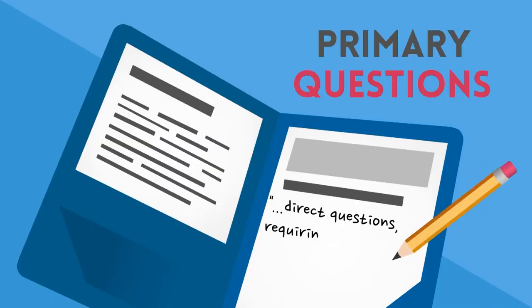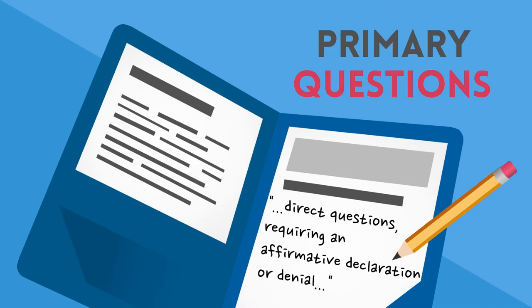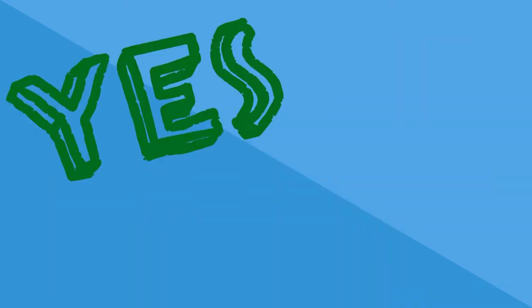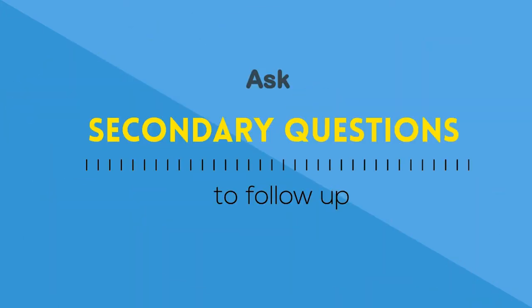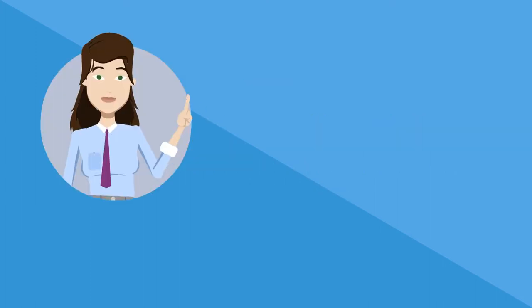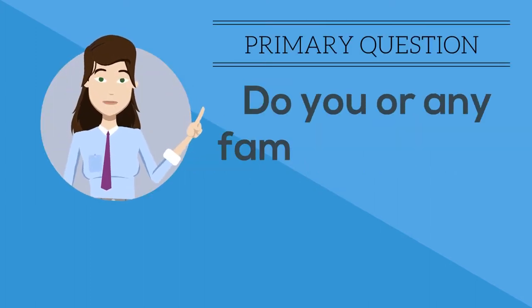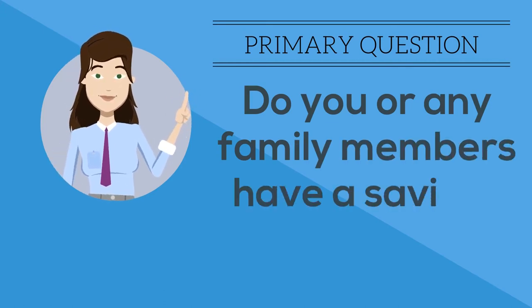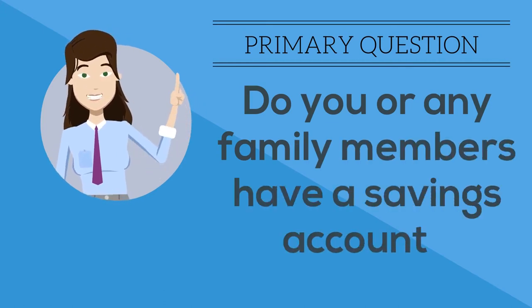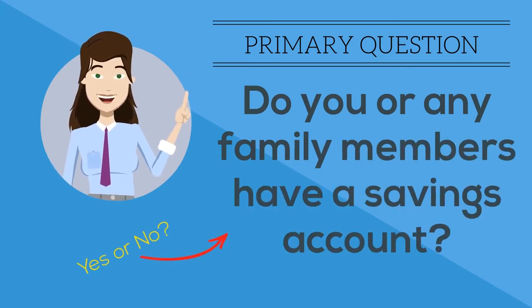First up, primary questions. These are direct questions that require an affirmative declaration or denial — in other words, they are yes or no questions. Here's an example of a primary question from HUD: Do you or any family members have a savings account? That's a yes or no question. It's direct and to the point.